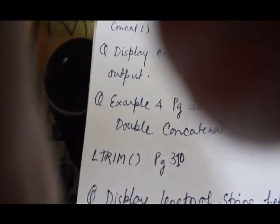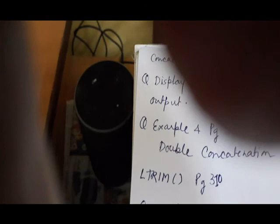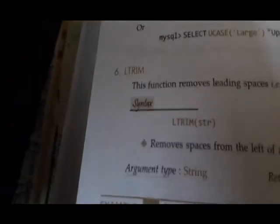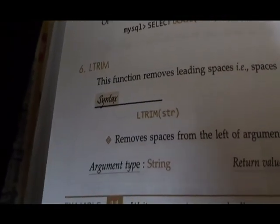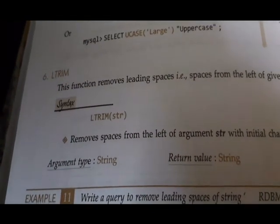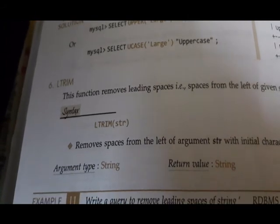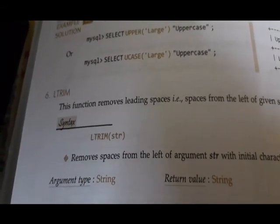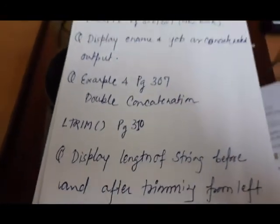Next we come to LTRIM and RTRIM functions, on page 310 of your book. LTRIM takes only one string as argument. LTRIM means trimming the leading spaces from the left-hand side. The question is: display the length of a string before and after trimming from the left side.